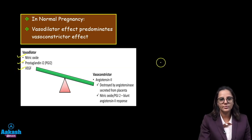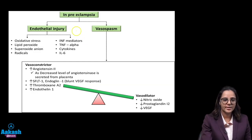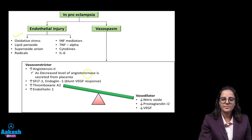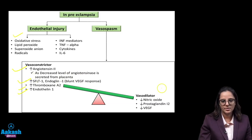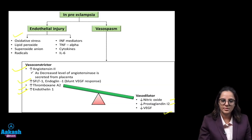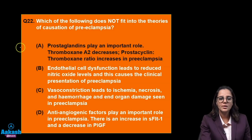In normal pregnancy, vasodilator effects predominate over vasoconstrictor effects. Vasodilators include nitric oxide, prostaglandin, and VEGF (vascular endothelial growth factor). Vasoconstrictor is angiotensin 2. In preeclampsia, the main pathogenesis is vasospasm and endothelial injury. Endothelial injury is caused by oxidative stress — lipid peroxides, superoxide radicals, TNF-alpha, IL-6 cytokines. Vasoconstrictors predominate: angiotensin 2, sFLT1, endoglin 1, thromboxane A2, and endothelin. Nitric oxide, prostaglandin, and VEGF are vasodilators. Just remember that the vasodilators are nitric oxide, prostaglandin, and vascular endothelial growth factor. Therefore, thromboxane A2 decreasing does not fit — this is the answer.